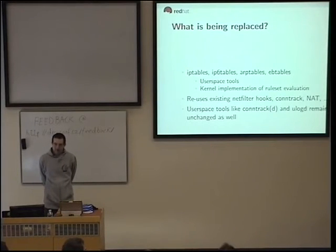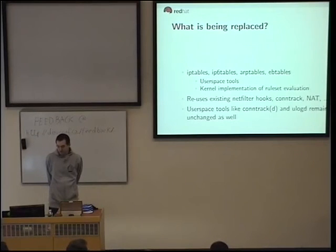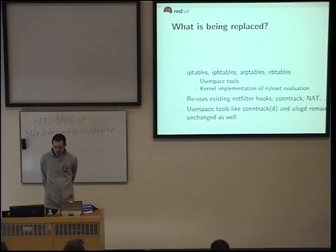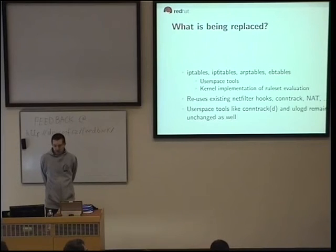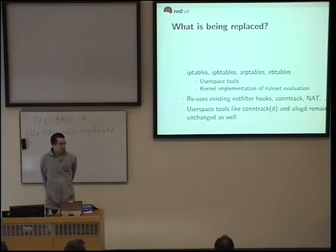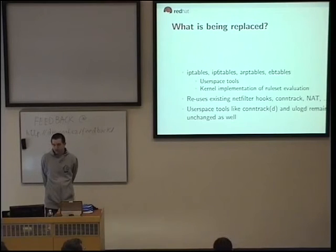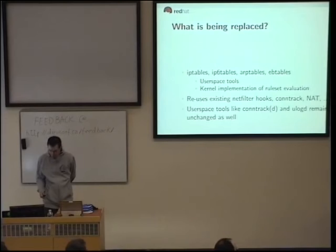What's being replaced? Most simply speaking: IPTables, IP6Tables, ARPTables, and EBTables — the latter being the bridge filtering framework. All these user space tools go away and are replaced with a new one. At the same time, we are also replacing the kernel implementations that do the IPTables, IP6Tables runtime evaluation of the ruleset in the kernel. What we do not replace is the connection tracking engine, network address translation engine — that stays the same. We are also reusing the existing Netfilter hooks, and user space packages like conntrack tools, conntrack daemon, and ulogd for packet logging also remain unchanged.